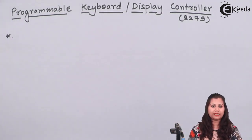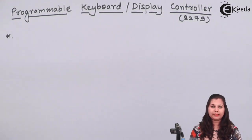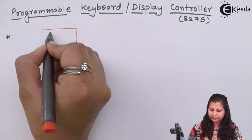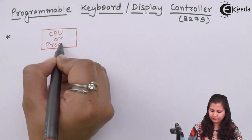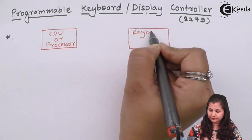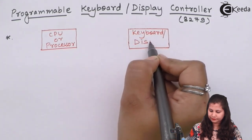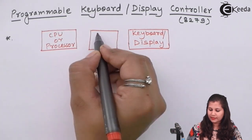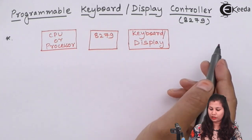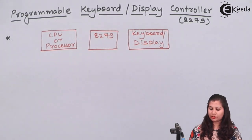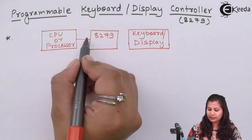Whenever we want to interface the keyboard with the CPU or the microprocessor, we use the programmable keyboard display controller as an interface. So if we have the CPU on one side and the keyboard or display unit on the other, then as an intermediate or interface we will have the 8279. Whenever the CPU and the keyboard want to transfer data or communicate with each other, this communication will take place through the 8279.